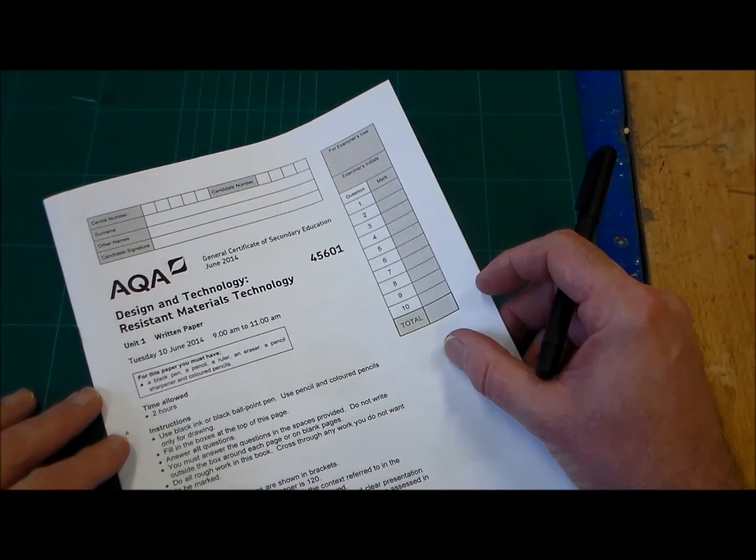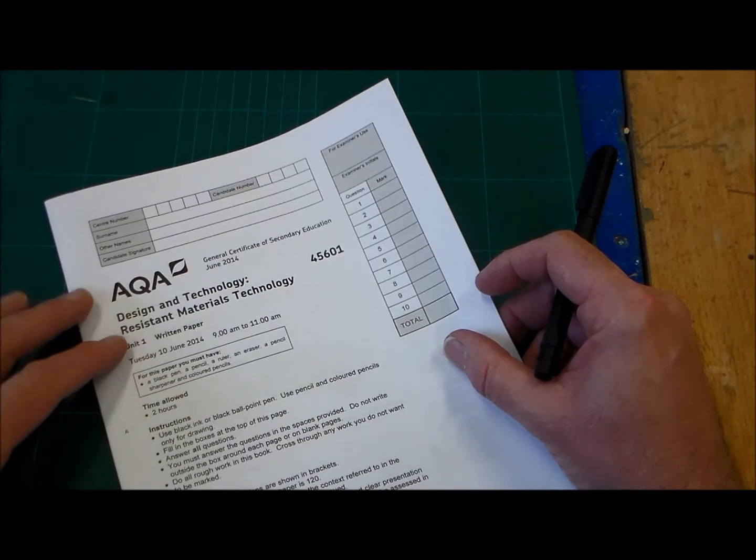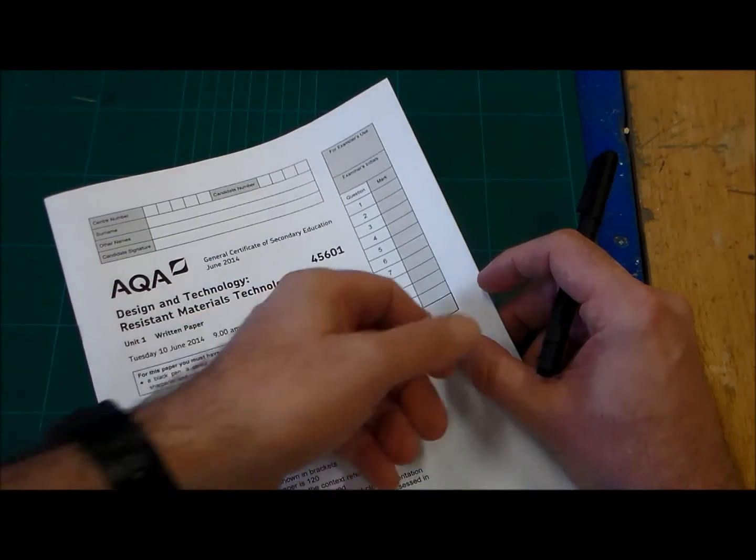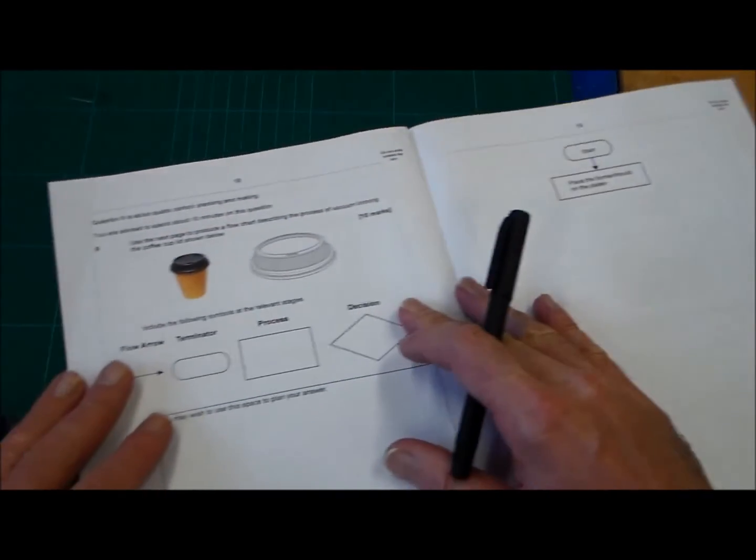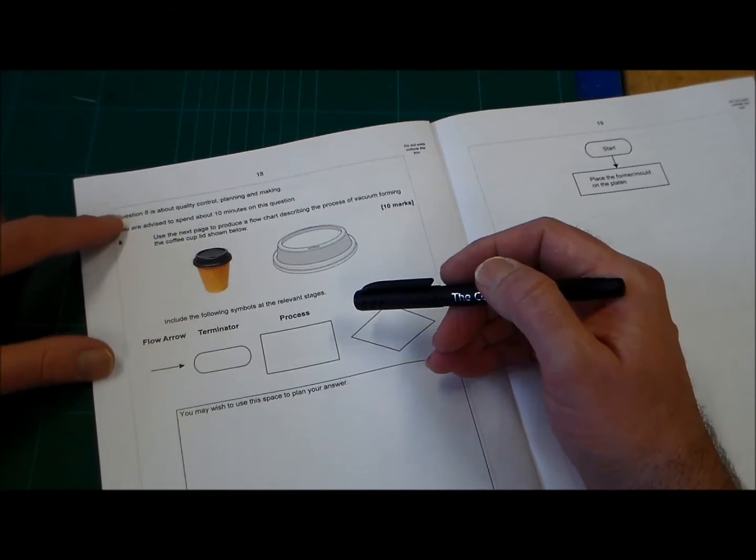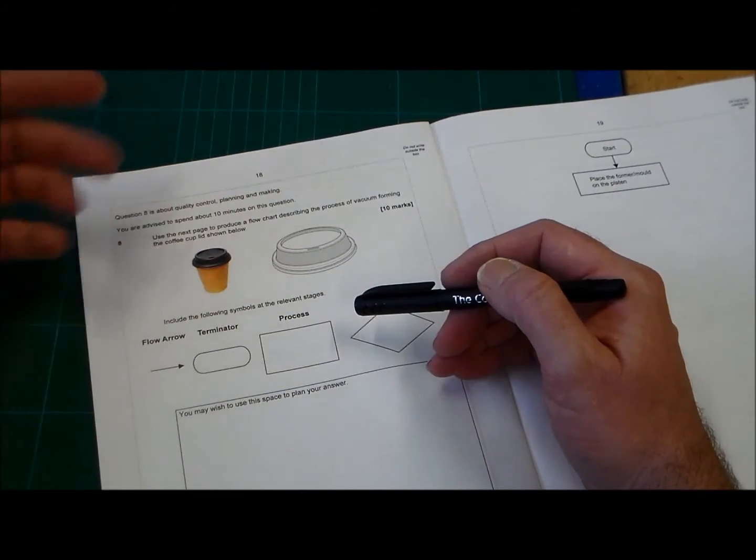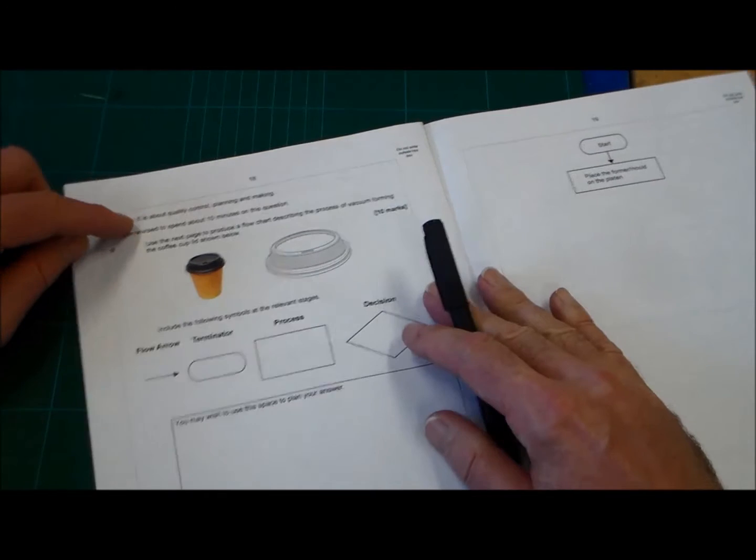Okay, this is Mr. Ridley's RMT revision, and we're looking at an AQA paper, or a question here, from June 2014. And this question is on flow diagrams and vacuum forming. So the question is, it says about quality control, but it is flow diagrams. It says 10 minutes.